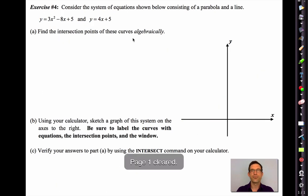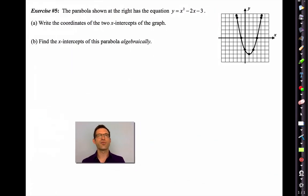Exercise five. The parabola shown at the right has the equation of y equals x squared minus two x minus three. Letter A. Write the coordinates of the two x-intercepts of the graph. That's not very difficult. Here's one, and that's at x equals negative one. And here's the other one. That's at x equals positive three. Letter B says, find the x-intercepts of the parabola algebraically. Well, what is always true about the x-intercepts? The output y equals zero, which is why we oftentimes call x-intercepts zeros because the y value is zero there.